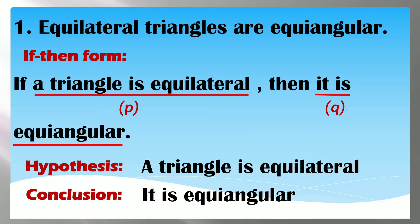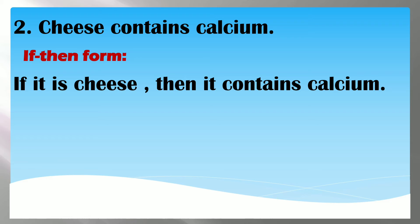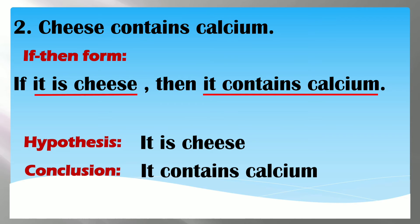So our P is 'a triangle is equilateral' and our Q is 'it is equiangular.' For number 2: 'Cheese contains calcium.' Let's convert it to if-then form: 'If it is cheese, then it contains calcium.' So our hypothesis is 'it is cheese' and our conclusion is 'it contains calcium.' That is our P and our Q.